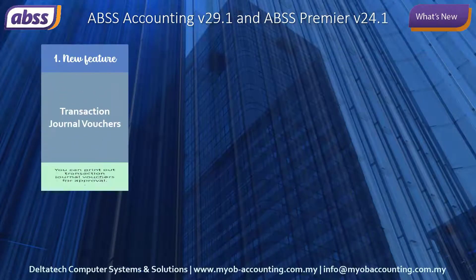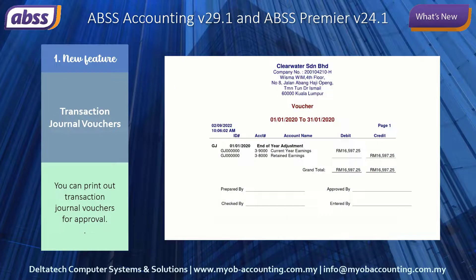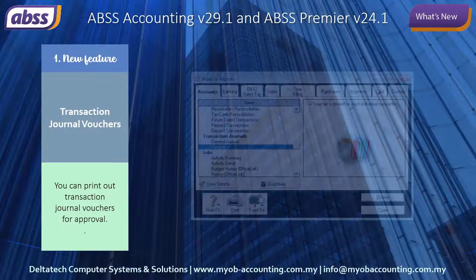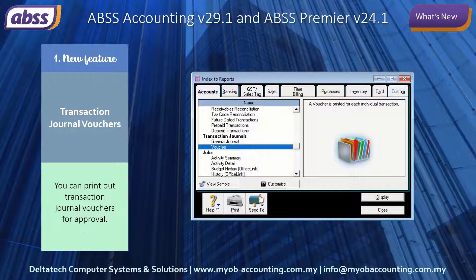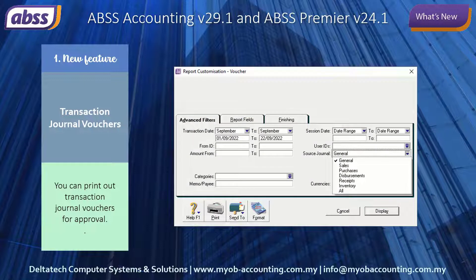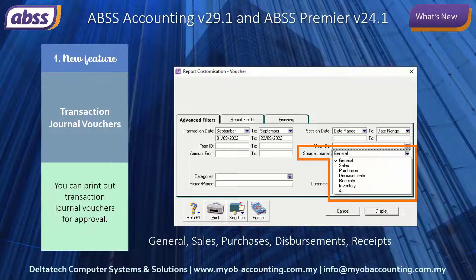You can now print out transaction journals and go through the process of having it checked and approved. To print out these vouchers, in Index to Reports, select the Accounts tab, then scroll down to Transaction Journals and select Voucher. These transaction journals are available for general, sales, purchases, disbursements, receipts, as well as inventory transactions.